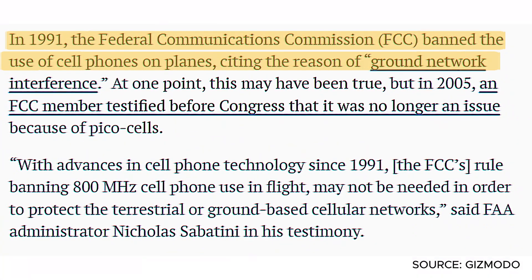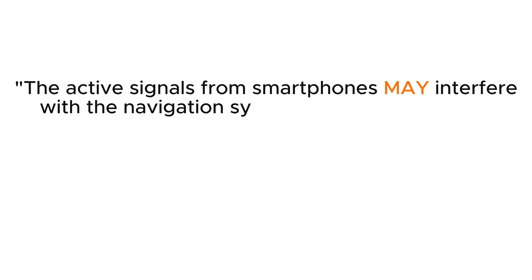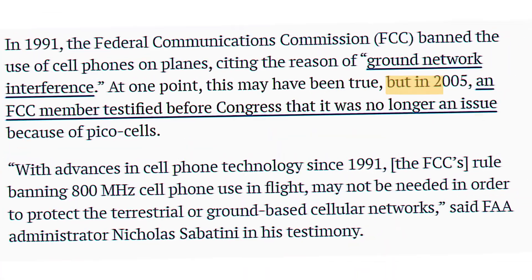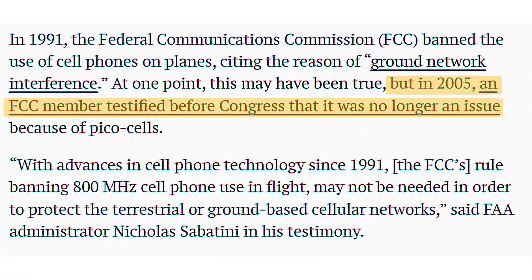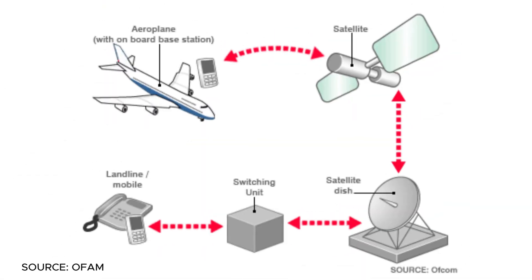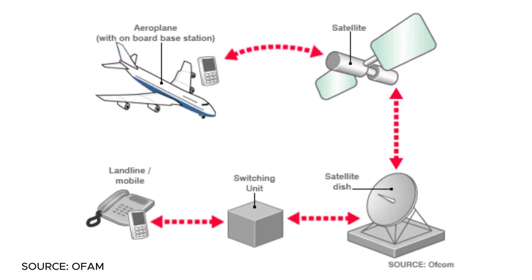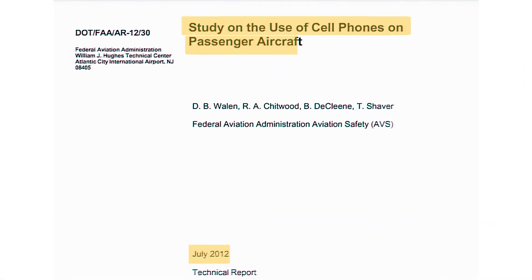It all started in 1991 when the Federal Communications Commission banned the usage of cell phones on aeroplanes, saying that active signals from smartphones may interfere with the navigation system. Later in 2005, the FCC testified that this was no longer an issue because of small cellular base stations established on the aeroplane, which served connectivity during the flight without any interference with the aircraft's communication system.